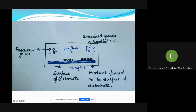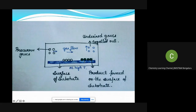The product which is formed is in the form of vapor. These vapors are condensed, and then the substrate is scraped using a scraper, and the particles which are formed are collected in the particle collection unit.